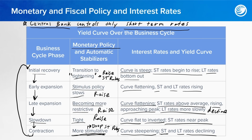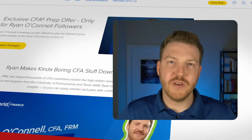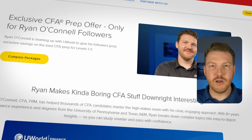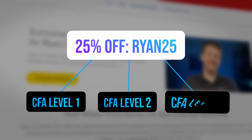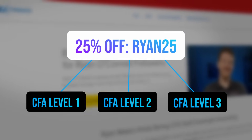After the slowdown, the yield curve is flat to inverted — and as we discussed, inversion can be a sign that a recession or contraction is coming. So you get that inverted yield curve and now you cycle back to contraction, playing out the whole cycle once again. This video is part of UWorld's comprehensive CFA program — get 25% off using promo code RYAN25 via the link in the description.